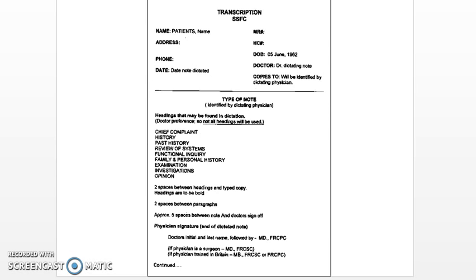The information contained in this report is generally documented in a specific way, and here's an example for you to look over. At the top is the patient's name, address, phone, date. The MR is usually a K number — the registration number. HC is your health card number including version code, date of birth, the doctor dictating, and copies too. They will usually send one to the family doctor and or a specialist that is also included in the patient's health and well-being.